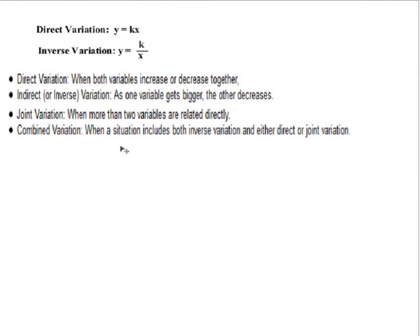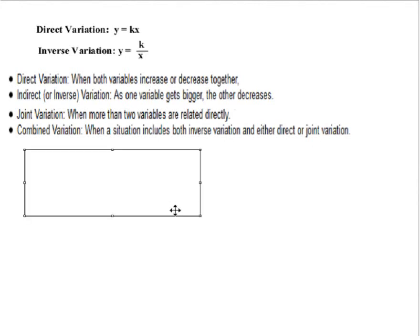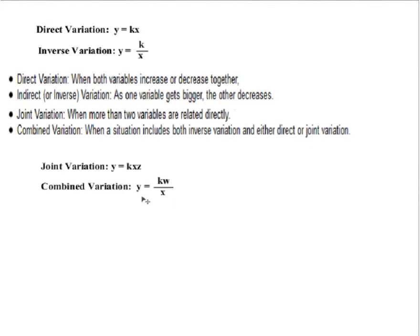Combined variation is a situation that includes both inverse and either direct or joint variation. Joint variation could look something like this: y is equal to k, our constant, times x times z. That's just an example — there are many different things that could be involved with a joint variation.